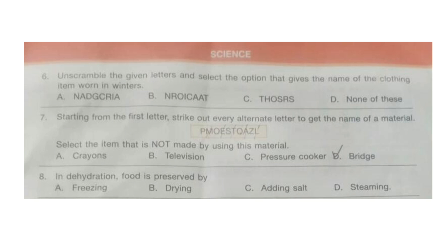Question 7: Starting from the first letter, strike out every alternate letter to get the name of a material, then select the item that is not made using this material. If we strike out every alternate letter starting from the first letter, we get the word 'metal'. So the correct answer is option A: Crayons.